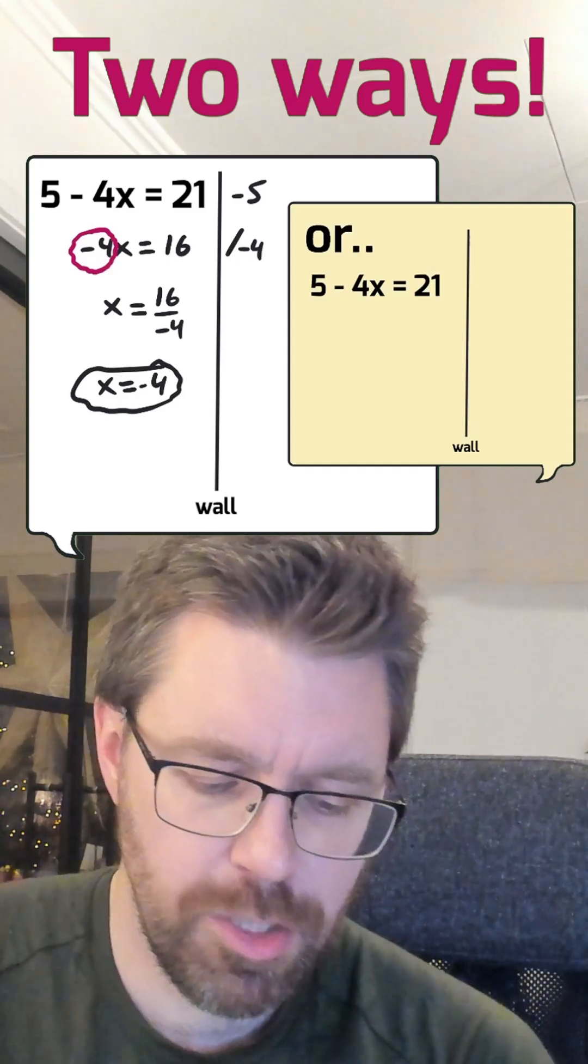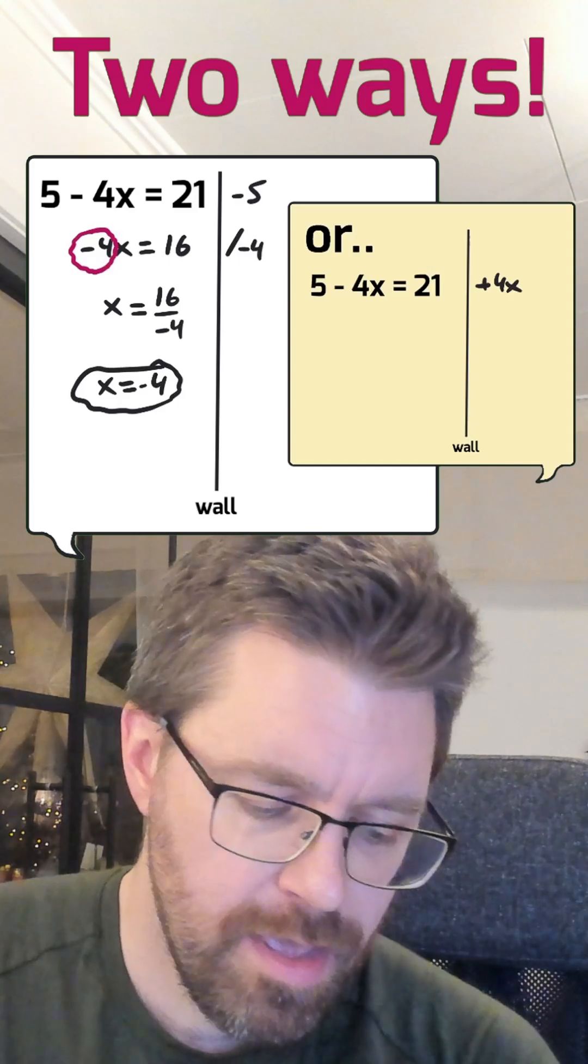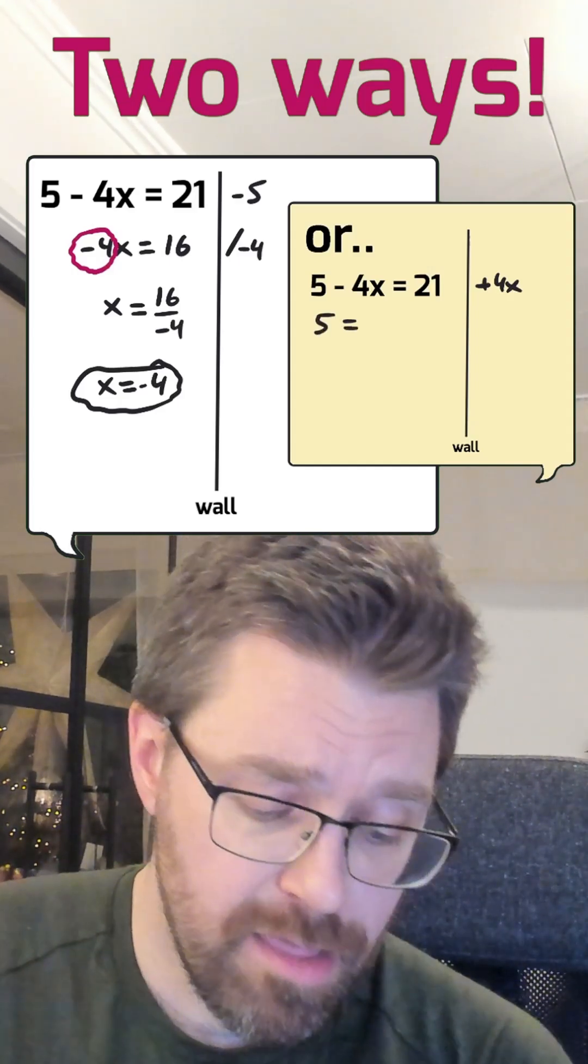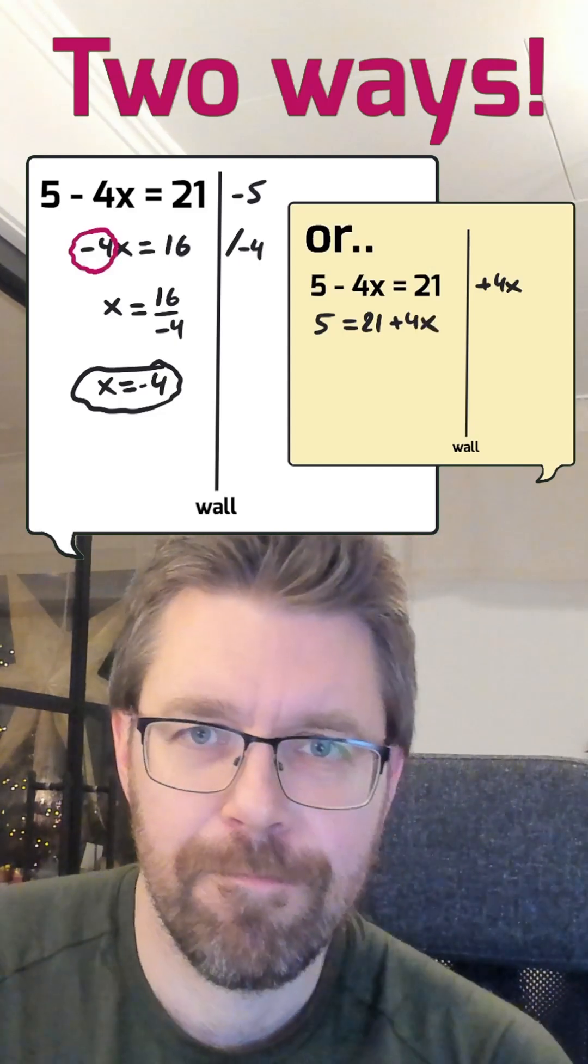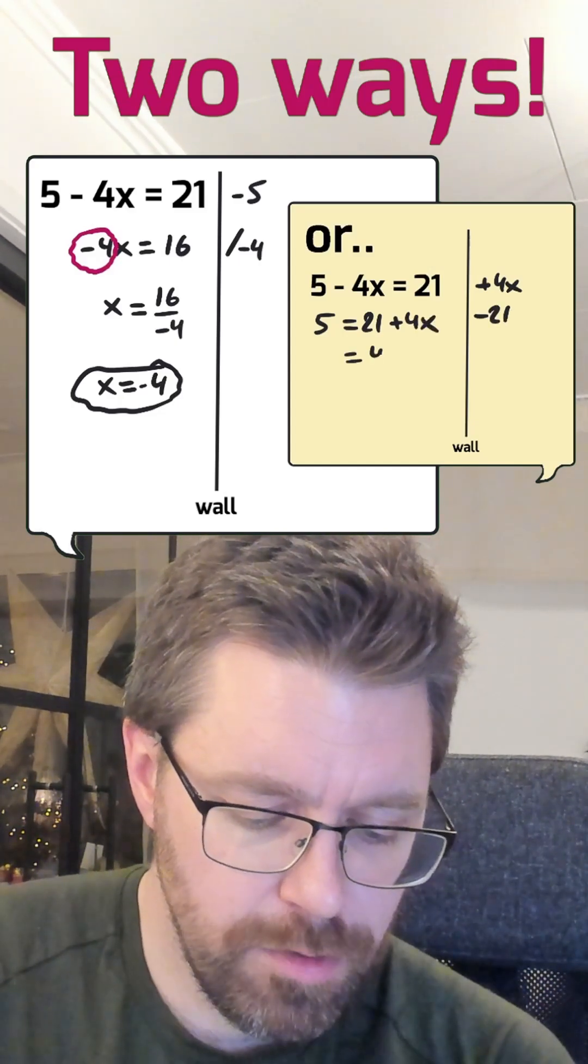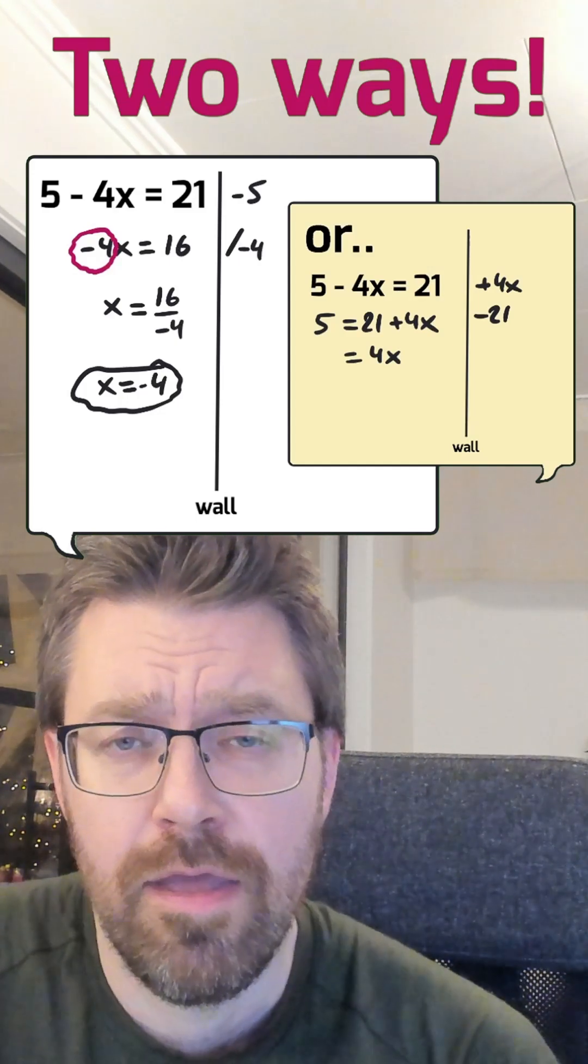So, to do it, you add 4x and then you got on the left side only 5 left and the right side 21 plus 4x. And then, you can subtract 21 from each side. You got 4x still on the right side.